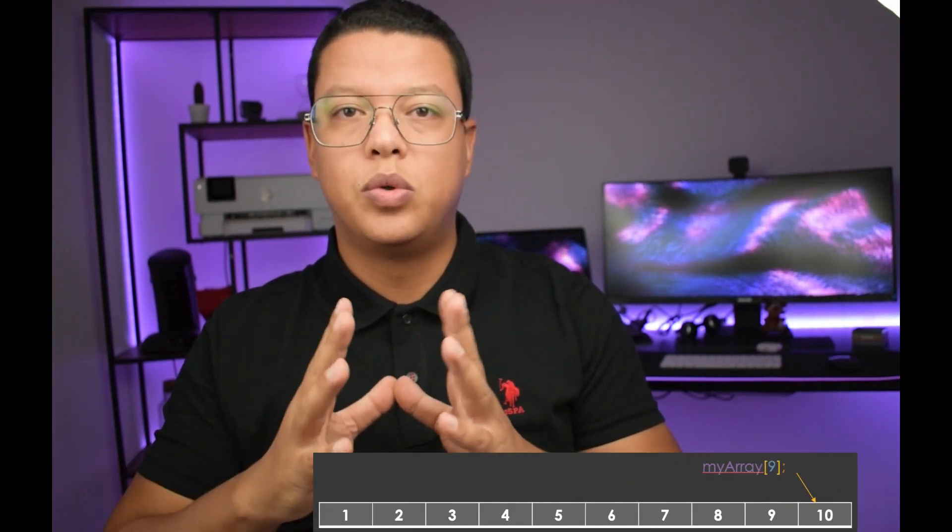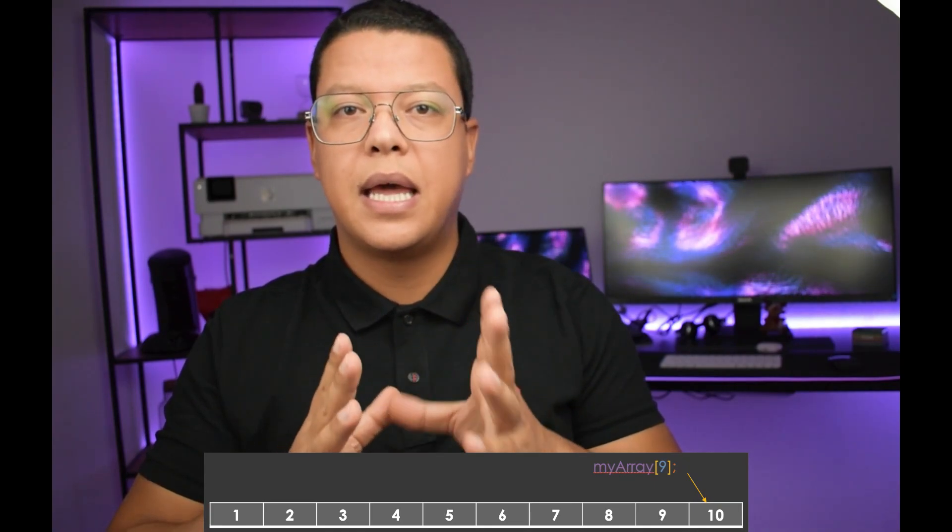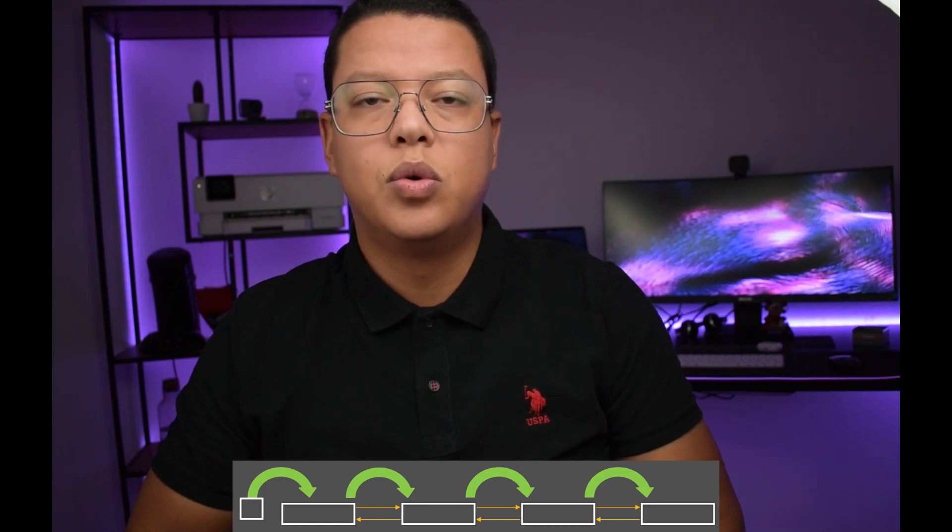Imagine you want to get element number nine from your list. The array list has what we call random access — all you need to do is provide the index, and it takes the same amount of time to get the first element as it does to get the last. In a linked list it's very different because Java doesn't jump directly to a reference — it starts from the beginning or the end of the list and traverses each element, checking if it's the required one until it's found.